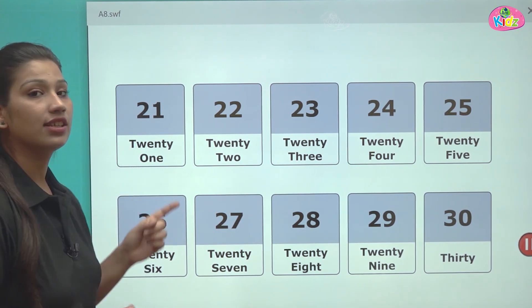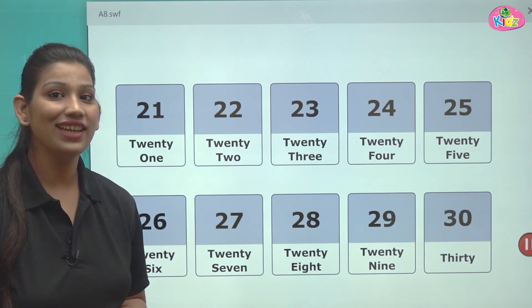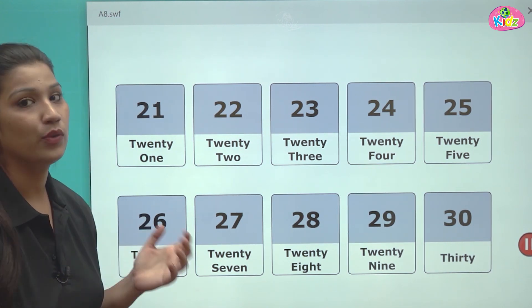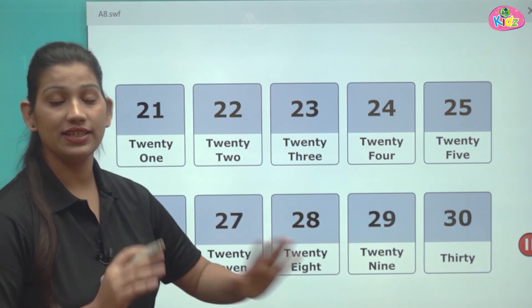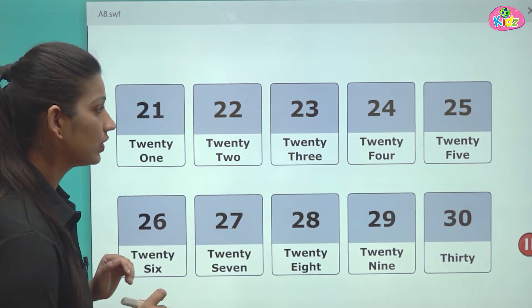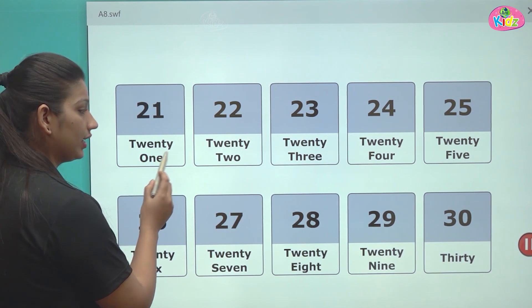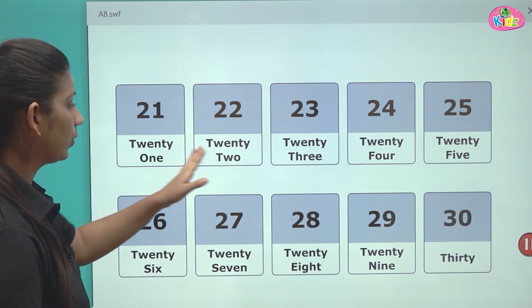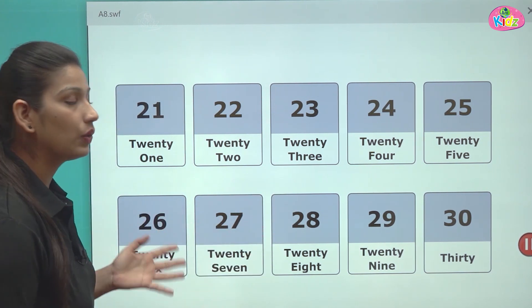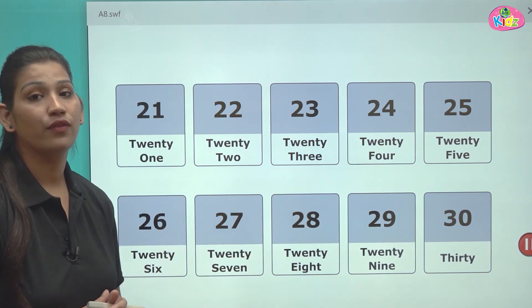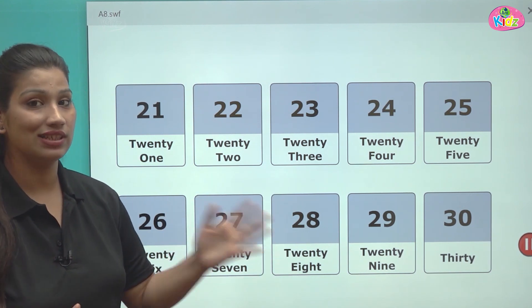20 ke saath jab hum O-N-E, 1 likh dete hain toh ban jata hai 21. Aapko 1 to 9 ke bhi spelling pata hai. 21 to 29 is very easy to write. You just have to write first 20 and then 1. 22, 20, T-H-R-E-E, 3. That's how you can write the numbers from 21 to 30.